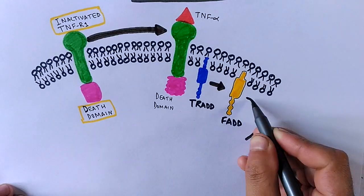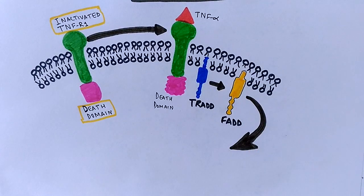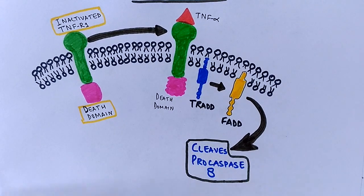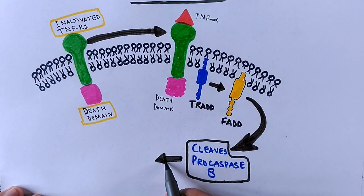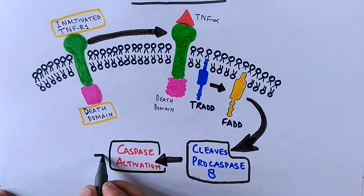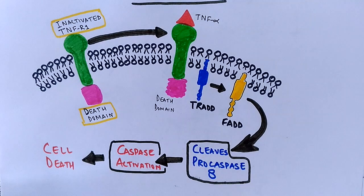After the recruitment of these two adapter molecules, FADD cleaves procaspase-8 into its active form, caspase-8. From here the caspase cascade starts and eventually there is cell death, apoptosis.